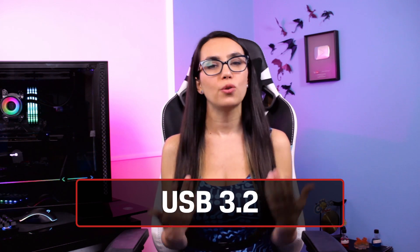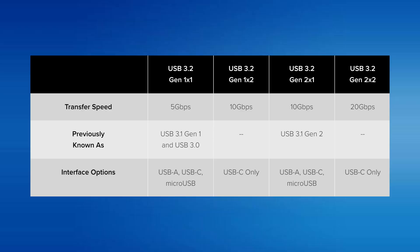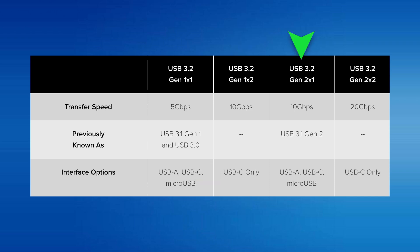Most of the industry stuck with USB 3.1 Gen 1 and USB 3.1 Gen 2. Then in 2017 we got USB 3.2 and saw the gradual move from USB-A to USB-C connectors. USB-C supports higher transfer speeds and faster charging and is becoming the new standard. Because of this, USB 3.2 comes in four variations: USB 3.2 Gen 1x1 — same speeds as USB 3.0; USB 3.2 Gen 1x2 — 10 gigabits per second in USB-C only; USB 3.2 Gen 2x1 — 10 gigabits per second in standard USB-A; and USB 3.2 Gen 2x2 — 20 gigabits per second, USB-C only.